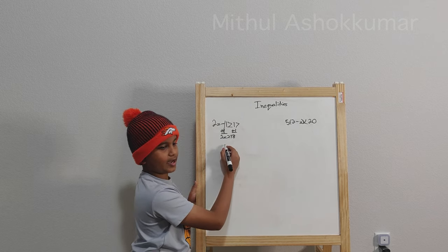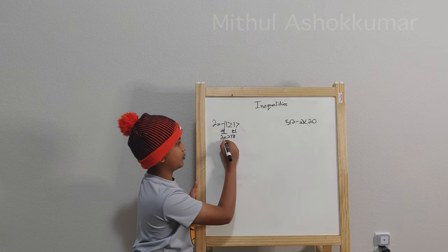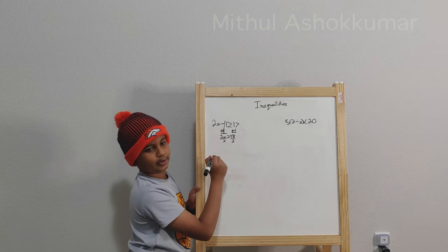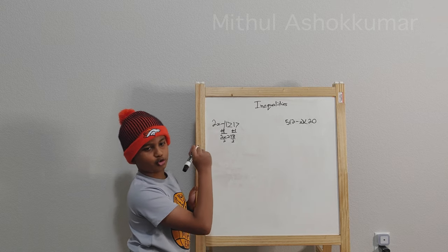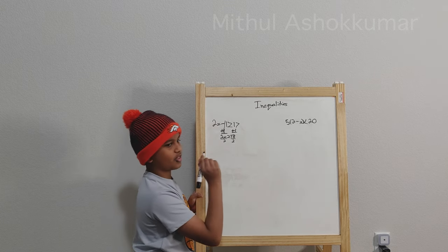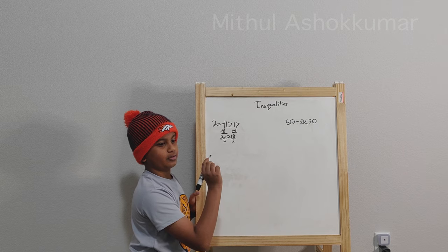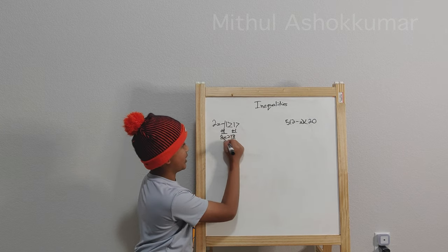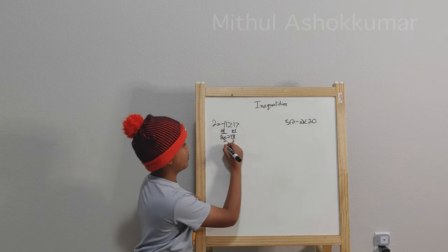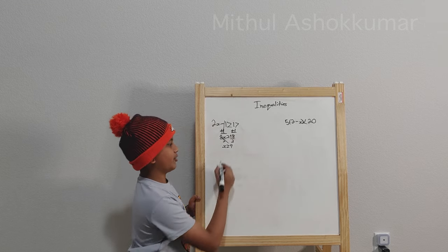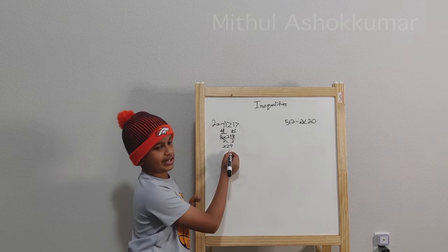And now we divide both sides by 2. It's almost like an equation — whatever you do to one side has to be done to the other, otherwise your inequality is going to be really false. So we'll just cancel out these 2's. Then we have x is greater than or equal to 9. And there you have it — that's the answer.